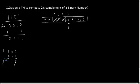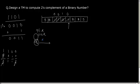Let us try to draw the Turing machine. I am in the starting state Q0. If I have a 0, I write 1 and move towards right. If I have a 1, I write 0 and move towards right. This will do the one's complement part.